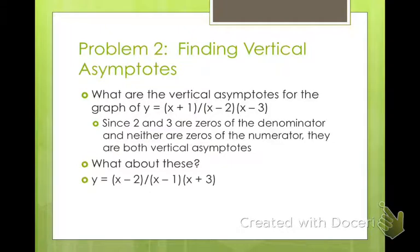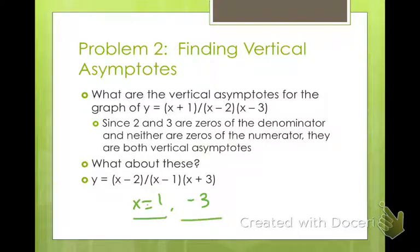For y equals (x-2) divided by (x-1)(x+3), our points of discontinuity are x equals 1 and x equals negative 3. Neither one is removable, so these are our vertical asymptotes at x equals 1 and x equals negative 3. Vertical asymptotes are the ones that go up and down. Asymptote means approaches — never touches.